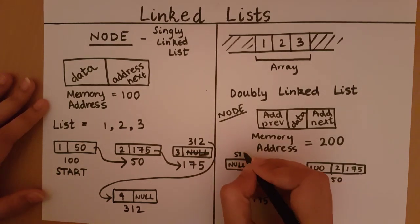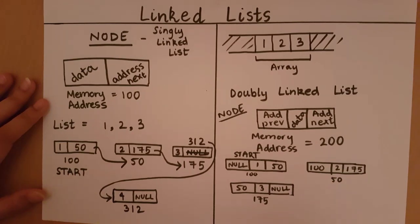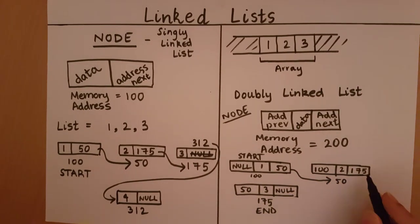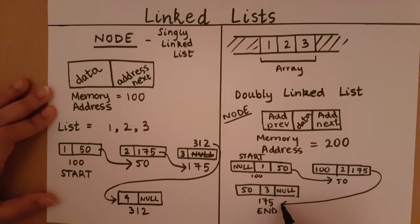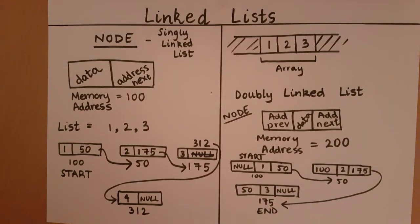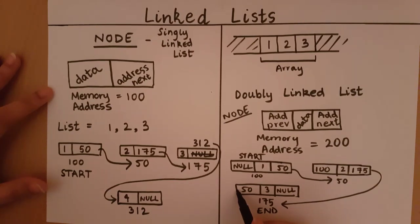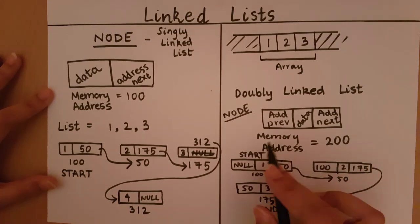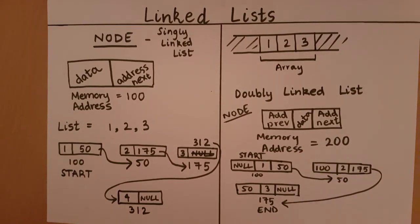We keep track of the start node, and it's also useful to keep track of the ending node. From the start node we can go to the next node using address 50, then from there to the third node. Now suppose we start from the end: at node 3 we have address 50, so we can go back to node 2, and from there we have address 100 so we can go back to node 1. This is a simple variation of a linked list in which we store both the address of the next node and the previous node.